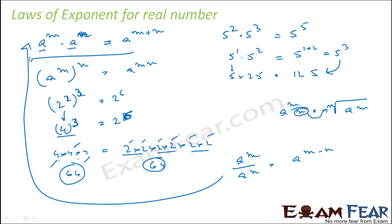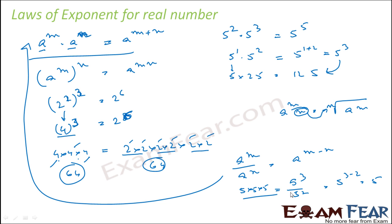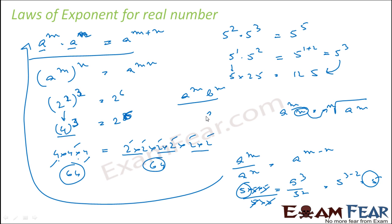Similar to the first rule: a to the power m divided by a to the power n is a to the power m minus n. For example, 5 to the power 3 divided by 5 to the power 2 is 5 to the power 3 minus 2, that is 5. You can verify: 5 to the power 3 is 5 into 5 into 5, and dividing by 5 to the power 2 cancels two fives, leaving 5. One more rule: a to the power m times b to the power m.